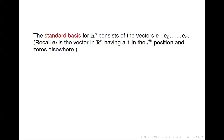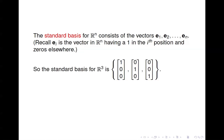The standard basis for Rn consists of the vectors e1 through en. e sub i is the vector in Rn that has a one in the ith position and zeroes everywhere else — you can think of e sub i as the ith column of the identity matrix. So the standard basis for R3 consists of those three vectors, which are the columns of the 3×3 identity matrix. In general, the dimension of Rn is n.